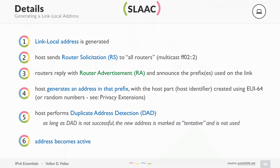Once you have generated your address, you have to use Duplicate Address Detection to make sure your new address is unique. If it is not unique, it is marked as tentative and it is not used yet, so all communication is reliant on the link local address. If you get no neighbor advertisement back to your DAD message, then you know you have an address from the prefix that the router announced, and you also know your router's address. Nobody is using your address yet, so you will use it and the address becomes active.